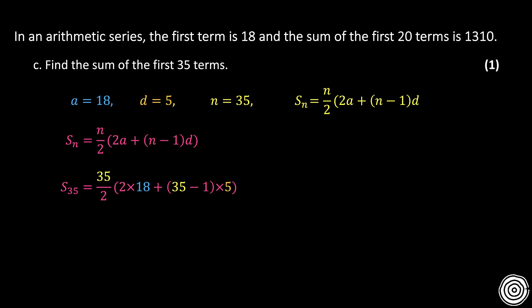So I've got 35 over 2, open bracket. I now do 2A, which is 2 times 18, plus. Open another bracket. N minus 1, which is 35 minus 1. Multiply that by 5. Close the bracket. Just simple computation into your calculator. And you get 3,605 as your answer.